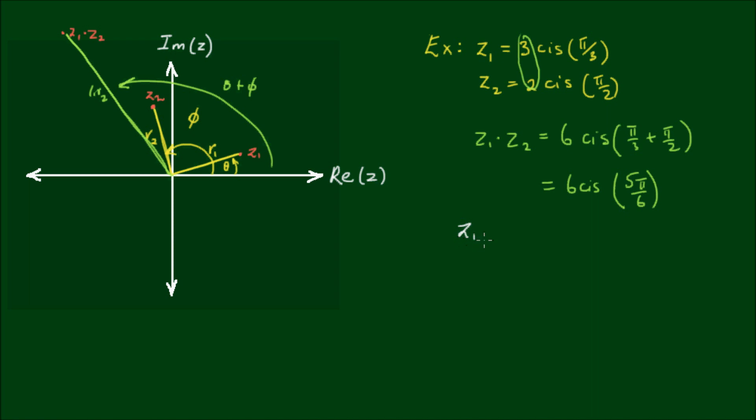Now if I want to express this product in Cartesian form, I could write the result as 6 outside of cos 5π on 6 plus i sin 5π on 6. Cos 5π on 6 is minus root 3 over 2, sin 5π on 6 is 1 over 2, and that's equal to minus 3 root 3 as the real component, plus i times 3 as the imaginary component.